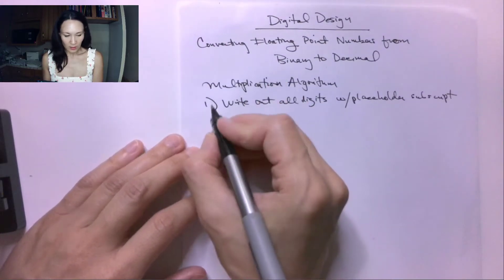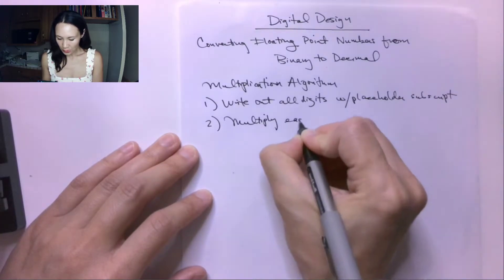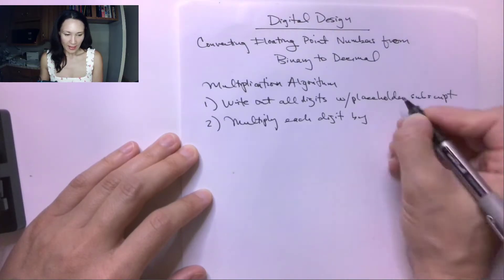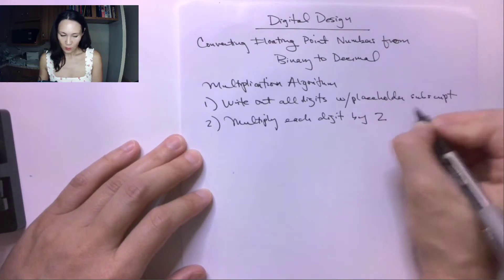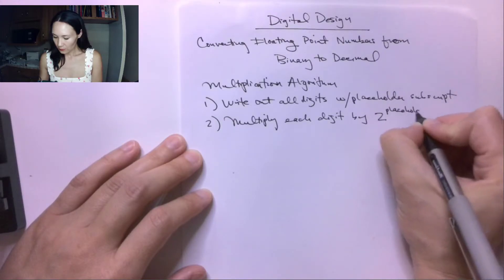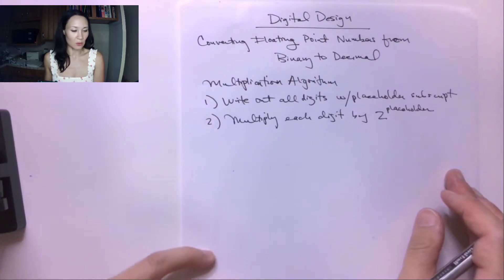And then what we're going to do is multiply each digit by 2 raised to the placeholder. So whatever the subscript is on that digit, we multiply it by 2 to that subscript.